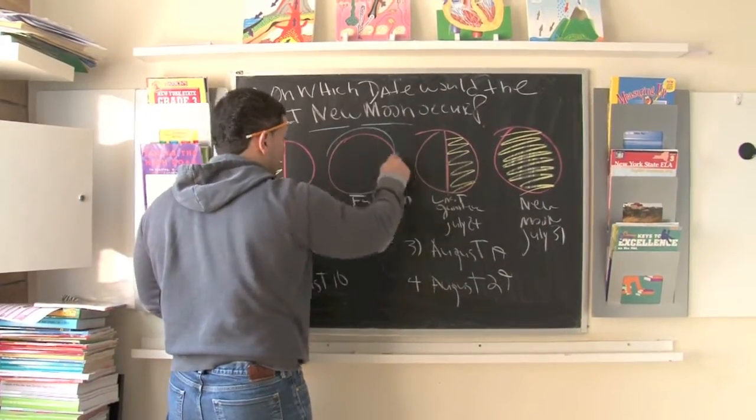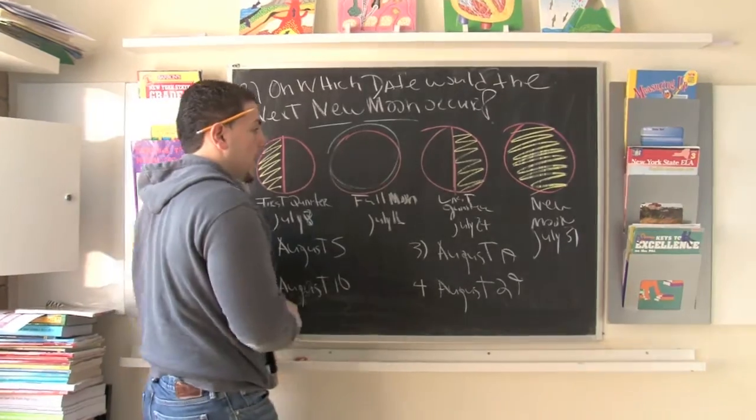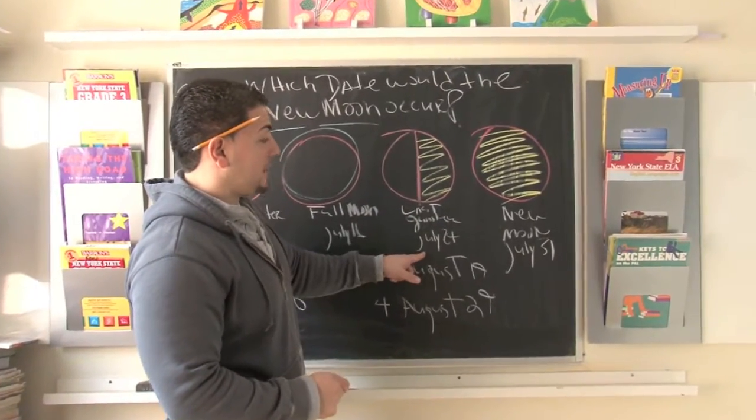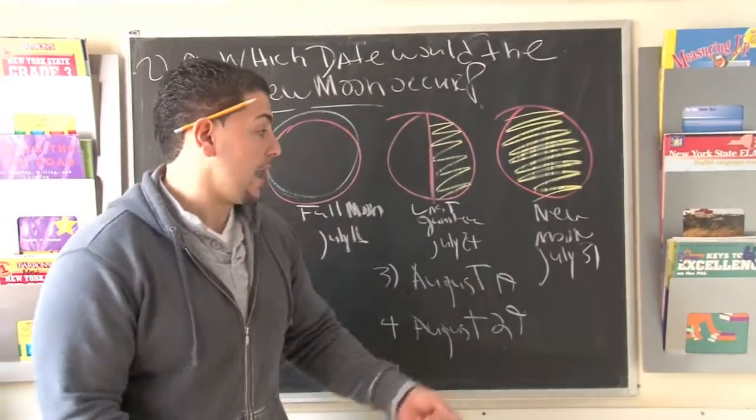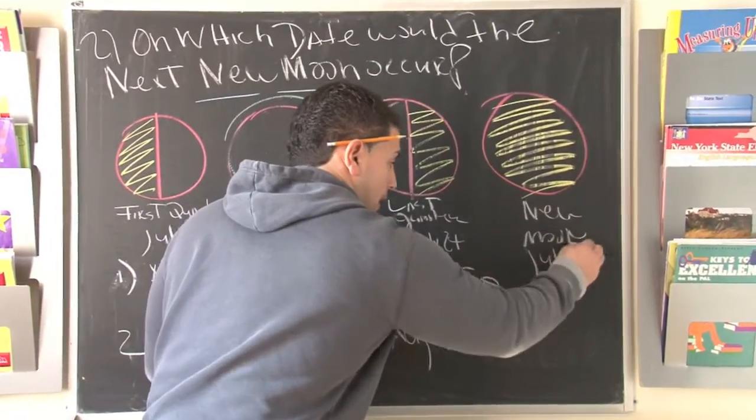On July 16th, we have a full moon. The last quarter is on July 24th. The other side is exposed and finally we get a new moon in July on July 31st.